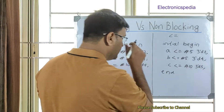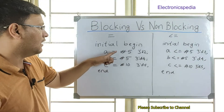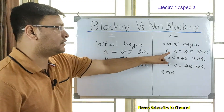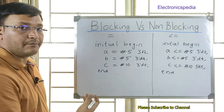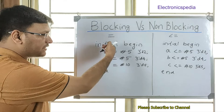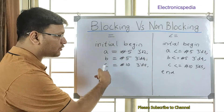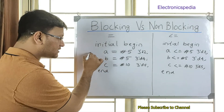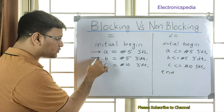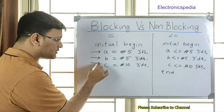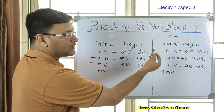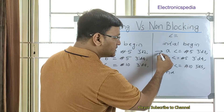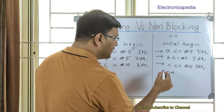So now observe — this is the blocking and this is the non-blocking. In the blocking statement, first this statement executes, then the next one, and then the next one. In the non-blocking statement, all three of these get executed in parallel.